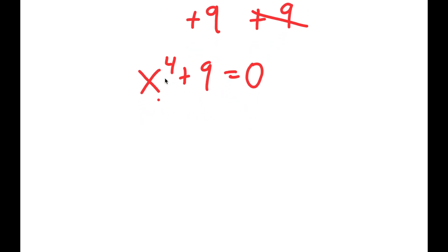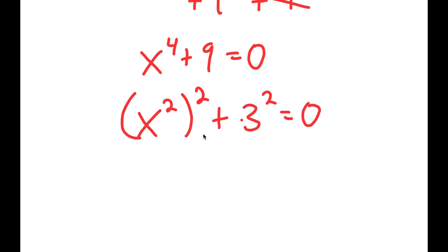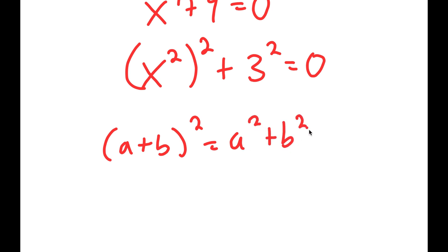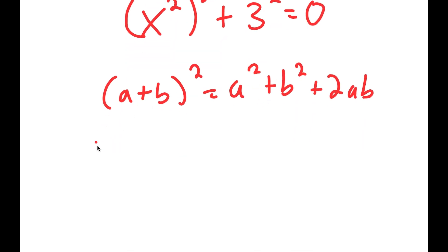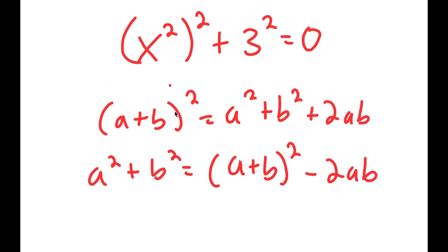Now from here, I can rewrite x to the power of 4 as x squared to the power of 2, and I can rewrite 9 as 3 squared. And if I have something in the form a plus b squared, this is equal to a squared plus b squared plus 2ab. And if I have something in the form a squared plus b squared, then this must equal a plus b squared minus 2ab, because this is the same thing as this without the 2ab.